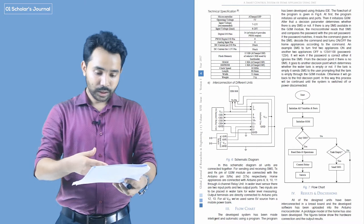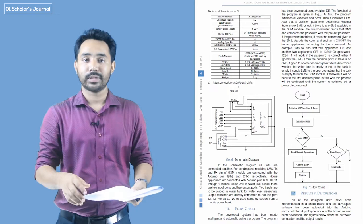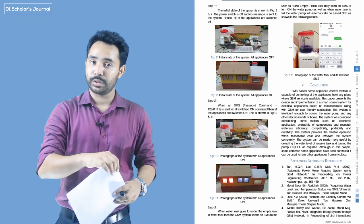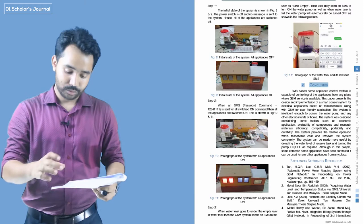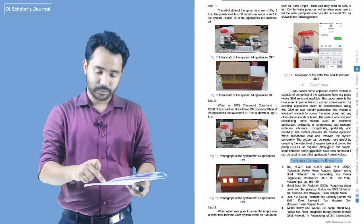So we have a result and discussion section — the result and discussion section is complete. So we have a conclusion, then we have a future work section, then we have a reference section. Then we have a full, complete paper.